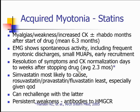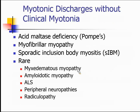The last thing to talk about are myopathies that can be seen frequently with myotonic discharges that can mimic myotonic dystrophy: acid maltase deficiency or Pompe's disease, myofibrillar myopathy — which looks similar to limb girdle muscular dystrophy but may present a little later in life and would look more like myotonic dystrophy type two — and sporadic inclusion body myositis. Those patients often get a lot of hand weakness that might look like myotonic dystrophy, though they usually present later in life. There are also rare other myopathies where you can see myotonic discharges without clinical myotonia: myxedematous myopathy, amyloidosis, and even some neurogenic disorders like ALS, peripheral neuropathy, or radiculopathy.